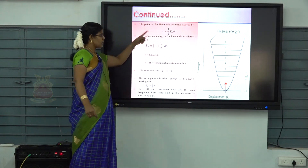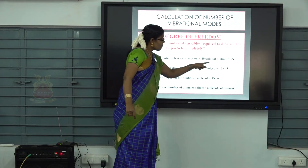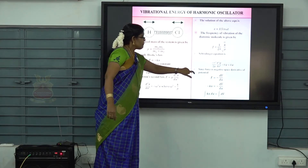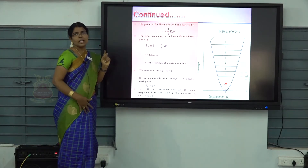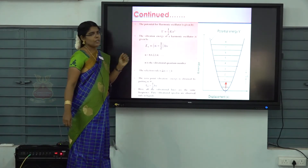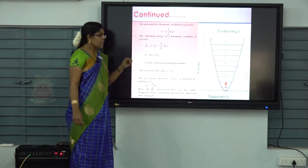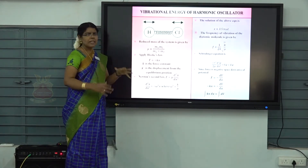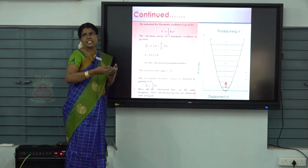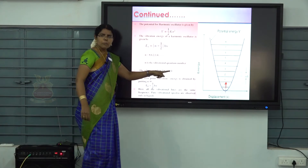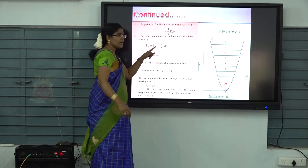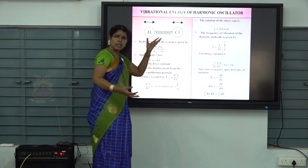By substituting this potential into the Schrödinger wave equation and solving, we get the vibrational energy: Eₙ = (n + ½)hν (in Joules), where n is the vibrational quantum number taking values 0, 1, 2, etc. When n = 0 (ground state), the zero-point energy is ½hν. The first excited state energy (n = 1) is (3/2)hν.